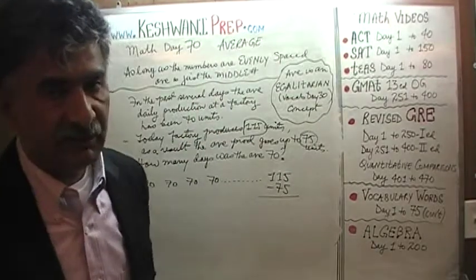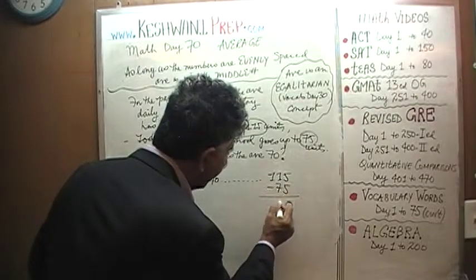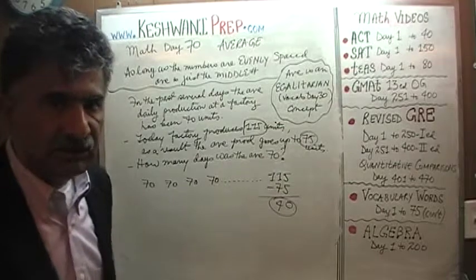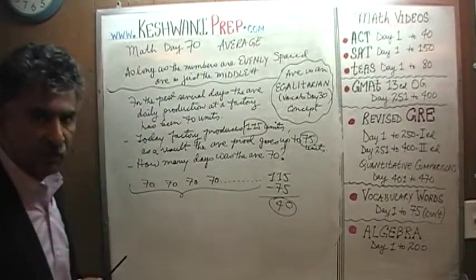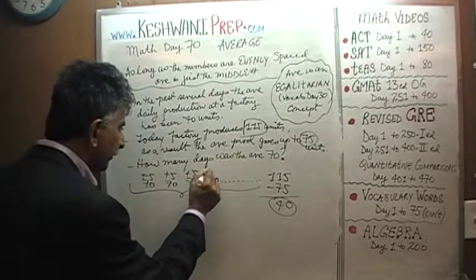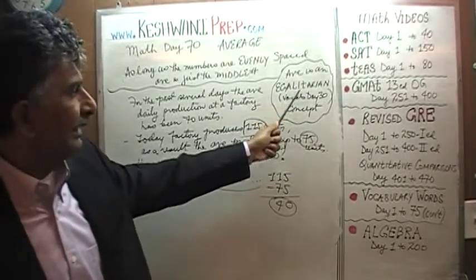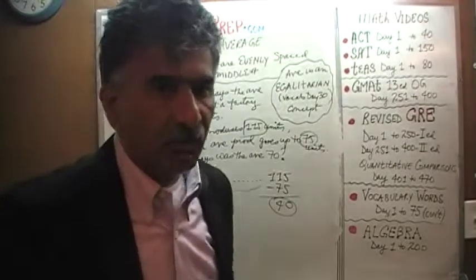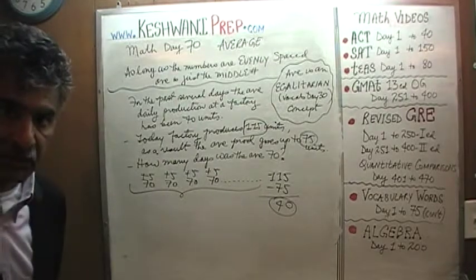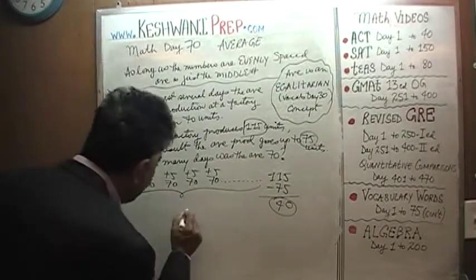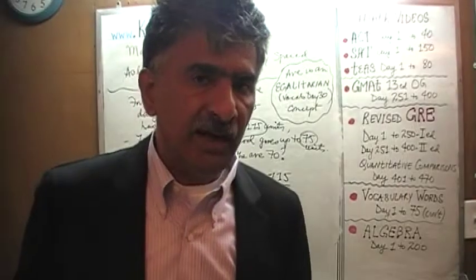To find out the excess — the extra that we produced in order for the average to be 75 — 115 minus 75 gives us 40. These 40 extra units need to be distributed among all the 70s. If you want to give every single day 5 more units, 40 can be distributed among how many days? Remember what we learned: average is an egalitarian concept. In order for everybody to be equal, we need to give everybody 5 more units. We have only 40 extra units. 40 divided by 5 is 8. There must have been 8 days in the past where we produced an average of 70 units. That's it.